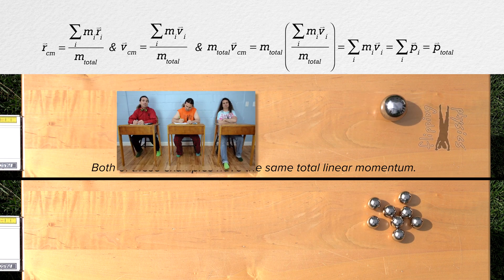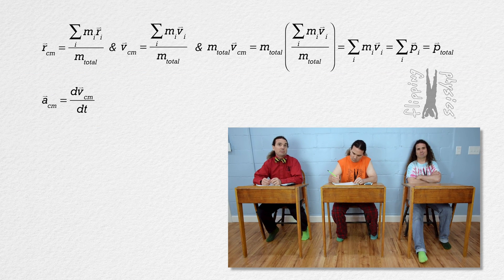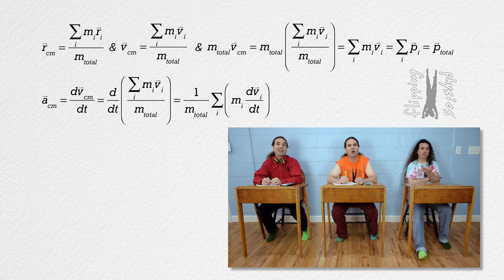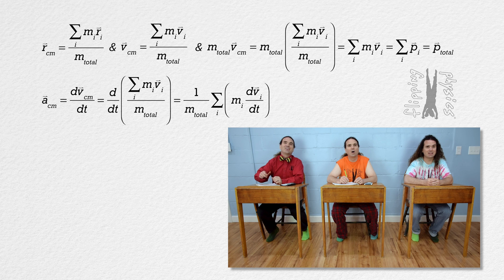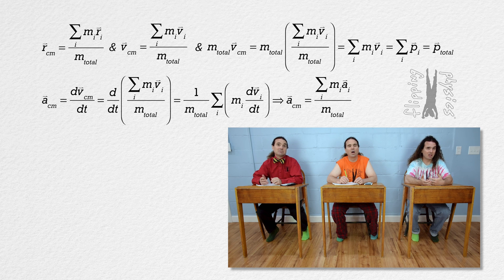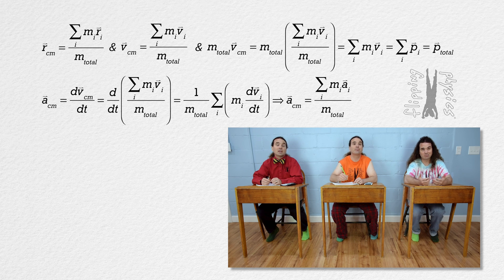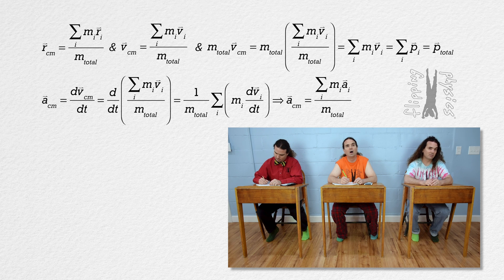I bet we can take the derivative of the velocity of the center of mass of the system of particles with respect to time to get the acceleration of the center of mass of the system of particles. The total mass of the system is still constant, which means, just like with the velocity, we can pull the total mass out from the derivative, and we get that the acceleration of the center of mass of a system of particles equals the sum of the mass of the i-th particle times the acceleration of the i-th particle, all divided by the total mass of the system — just replacing velocity with acceleration in that equation. In other words, the acceleration of the system of particles is the same as a single particle accelerating with the acceleration of the center of mass of the system of particles.